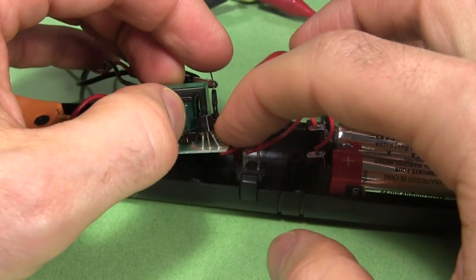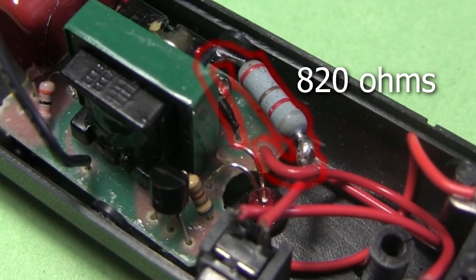I also run it like that for a while to see if any parts get too hot. None seem to. I find that an older 820 ohm fixed resistor gives the same light, so I solder that in.